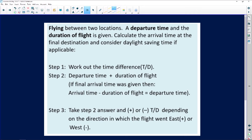When flying between two locations, you are given a departure time and the duration of the flight. All you need to do is calculate the arrival time at the final destination and consider daylight saving time, if it is applicable.